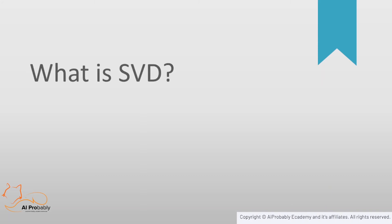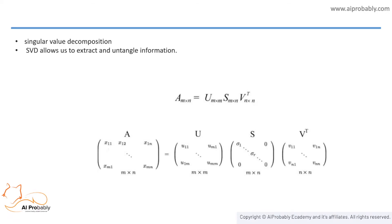Now let's look at SVD — Singular Value Decomposition — which takes a rectangular matrix of gene expression data. A is an m×n matrix where m represents genes and n is the experimental condition. A equals U times S times V-transpose, where the columns of U are the left singular vectors, S has the same dimensions as A and is diagonal, and V-transpose has rows that are the right singular vectors. SVD represents the original data in a coordinate system where the covariance matrix is diagonal.